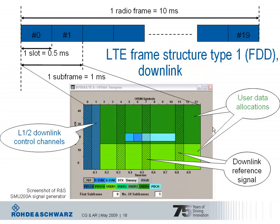In the middle in blue is the primary synchronization channel, the secondary synchronization channel, and the physical broadcast channel — PBCH — which carry predefined information important during cell search, and which will be explained in more detail later.